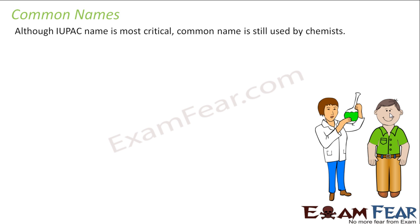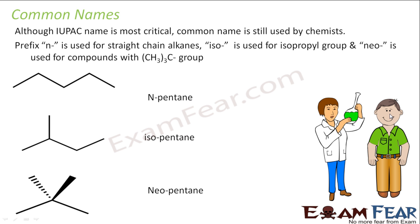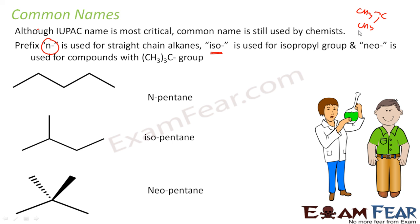It's like a home for them. So they call the compounds with the common names. The prefix 'n' is used for a straight chain. 'Iso' is used for isopropyl — if you have two CH3 groups attached to one carbon. 'Neo' is used for a compound where we have three CH3 groups attached.